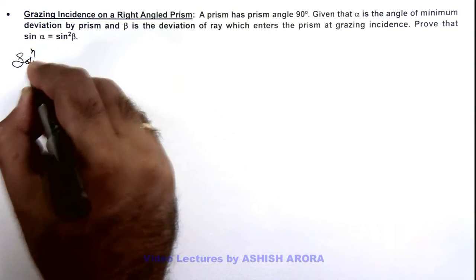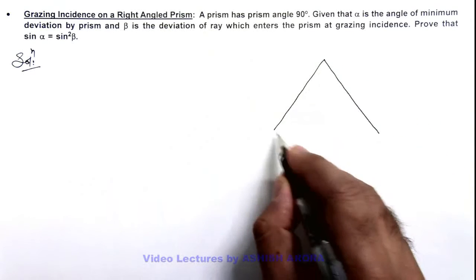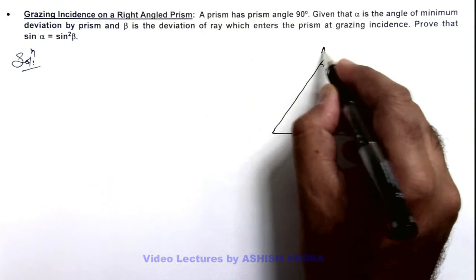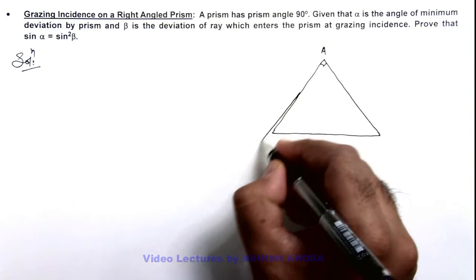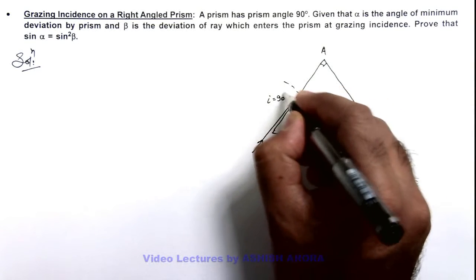To clearly understand the situation let's draw the picture and the ray diagram. If this is a prism with prism angle A equal to 90 degrees, on which a light ray incident in grazing fashion where the angle of incidence i can also be taken as 90 degrees.